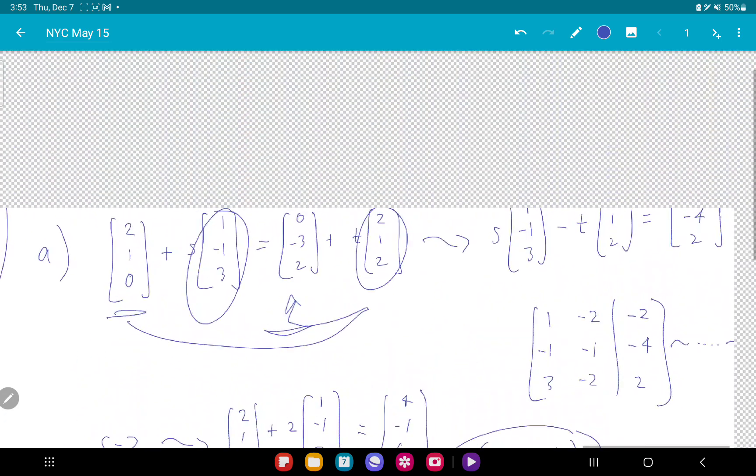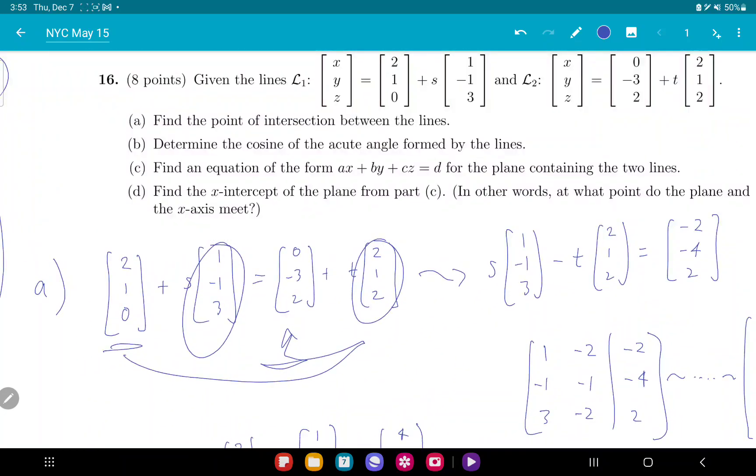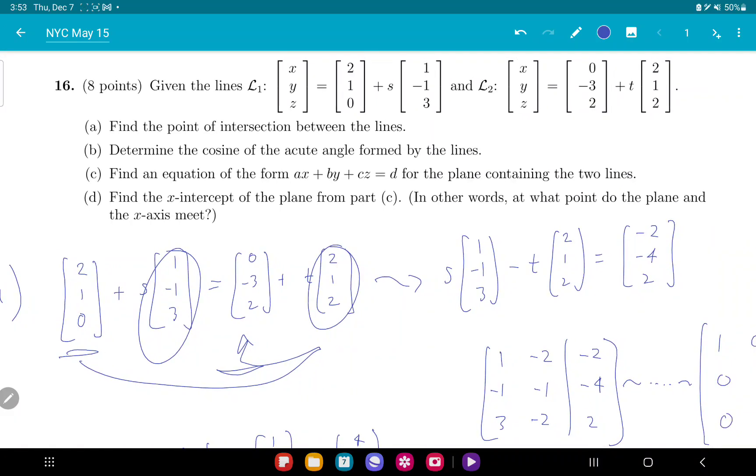Part C. Find an equation for the plane. I want a plane that contains the two lines. So the direction vectors are parallel to my plane, so their cross product will be normal to my plane. For my normal vector, I'll take this guy cross this guy.